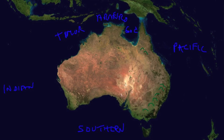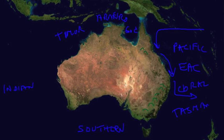We have some major ocean currents. In fact, one of the most rapid ocean currents on the planet is the East Australia Current, or EAC. It flows south to north, separating the Coral Sea to the north from the Tasman Sea to the south, both part of the Pacific Ocean. And then on the west coast, a very unusual south-flowing current called the Lewin Current.